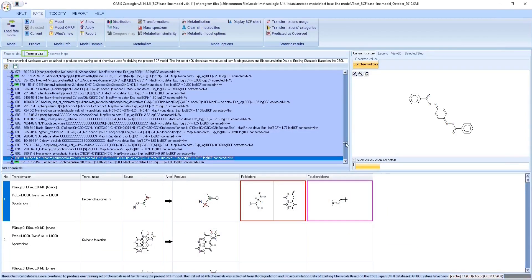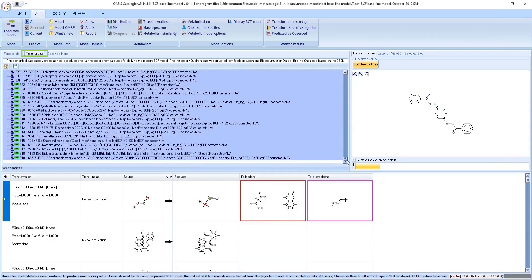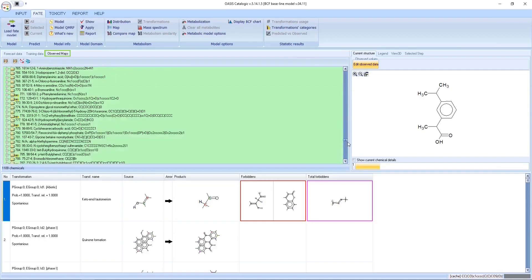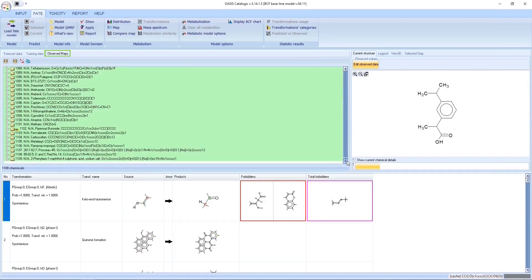The model is optimized to reproduce the observed BCF data for over 800 chemicals and to reproduce the documented fish and rat metabolism for over 1000 chemicals.